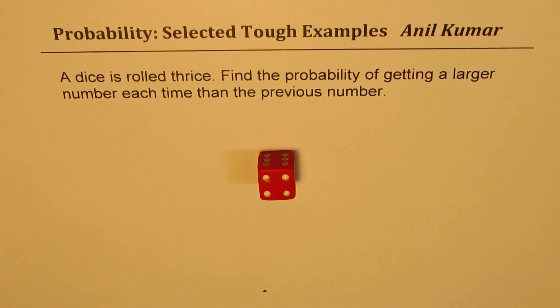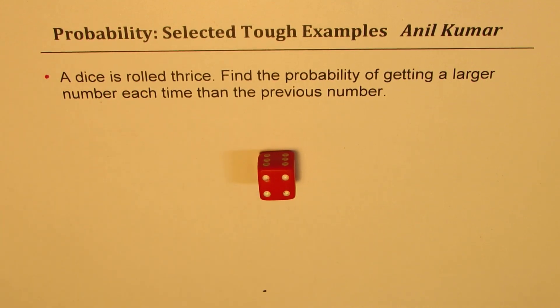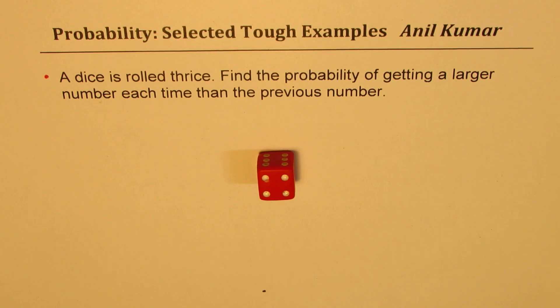The very first question here has been seen in previous test papers and probably also in IIT-JEE. The question here is: a dice is rolled thrice. Find the probability of getting a larger number each time than the previous number. So that's the question for you. Think about it, pause the video, and then look into my suggestions.